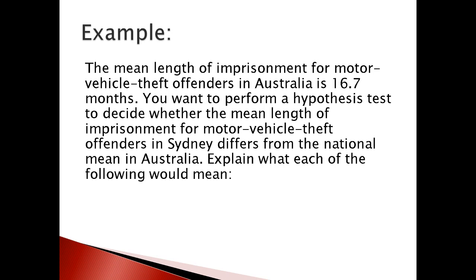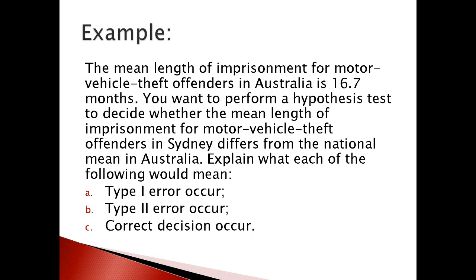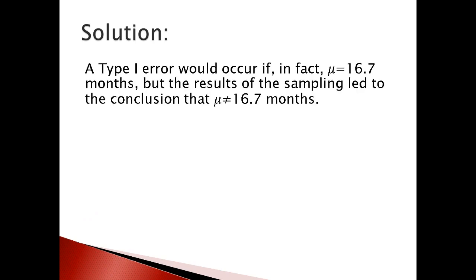Let's see an example to understand that concept. The mean length of imprisonment for a motor vehicle theft offender in Australia is 16.7 months. We want to perform a hypothesis test to decide whether the mean length of imprisonment for motor vehicle theft offenders in Sydney differs from the national mean in Australia. Explain what each of the following would mean: Type 1 error, Type 2 error, or correct decision.